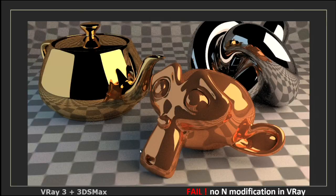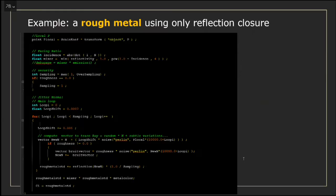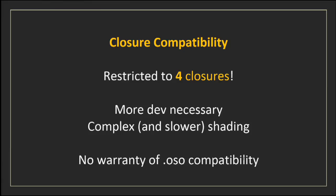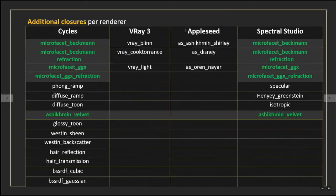As I said before, even with the same closure, you could have very, very different results. I think that using the same closure is easier because you don't have to think about what closure to use next. But there is some danger. If you are just using diffuse, it's okay. But even emission — yes, even emission — is sometimes missing. Even for making a light source, it's not so easy to use common closures.